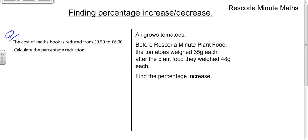So if you have a look at this one, the cost of the maths book is reduced from £9.50 to £6.00. Calculate the percentage reduction. Percentage reduction, percentage increase is always done the same way. So you look for the actual increase slash decrease, you divide it by the original, and then you multiply it by 100.